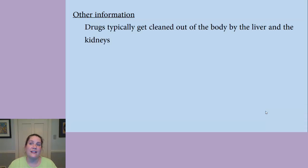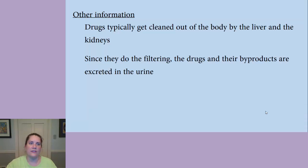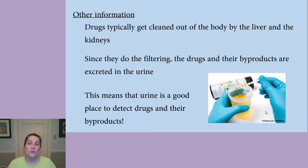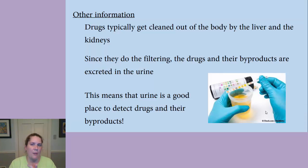Drugs typically get cleaned out of the body by the liver and the kidneys working together. Since the kidneys do the filtering, the drugs and their byproducts are excreted in the urine. The drugs themselves, or the byproducts — called metabolites — come out in the urine, and that's why urine can be used as a drug test. Your body gets rid of all the stuff it doesn't need, including drugs or the metabolites created from processing them.